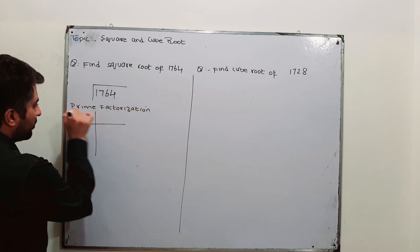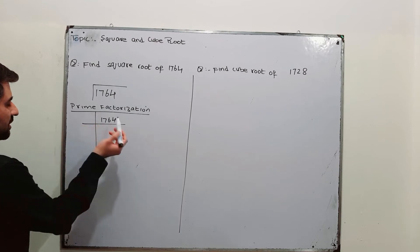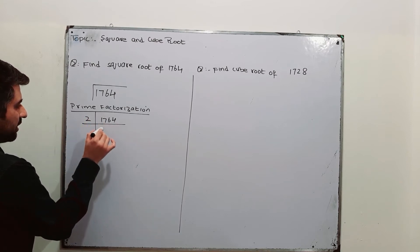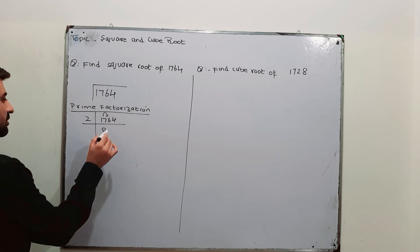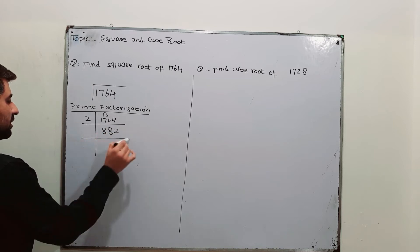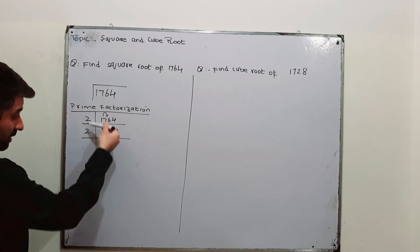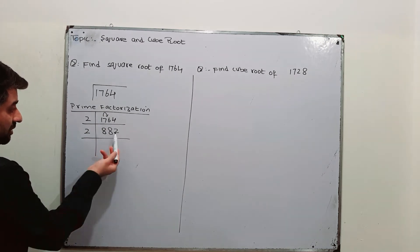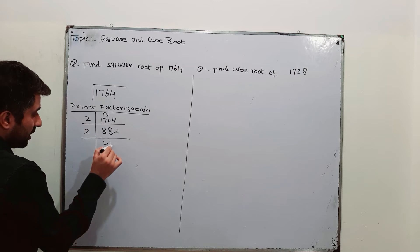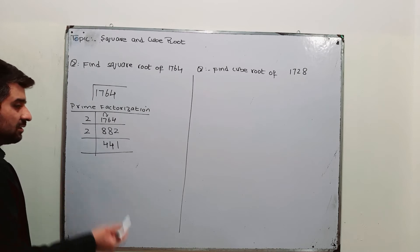As I am going to factorize 1764 using prime numbers starting from 2. 2, 8 times 16, it is 17 over here. 1 will be carried to next digit. It will become 16. 2, 8 times 16 and 2, 2 times 4. Again, starting from 2, 2 is prime and you will continue with 2 till you can divide this number. So, it can be divisible by 2. 2, 4 times 8, 4 times 8, 2, 1 times 2. Now, the 441 is not divisible by 2. It is no more an even number.